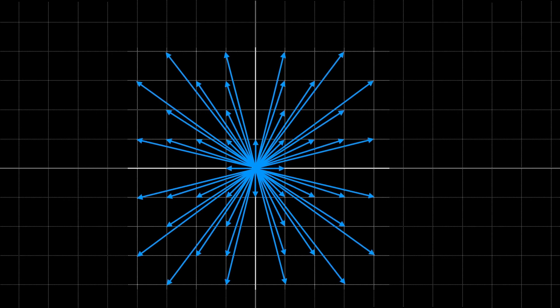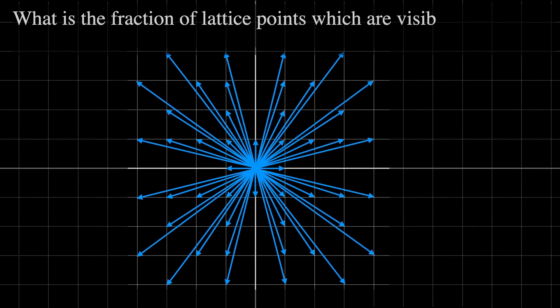By the end of this video, I want to have answered the question what is the fraction of lattice points which are visible from the origin? Interestingly, this question is strongly connected to prime numbers and the Riemann zeta function, a function well known for being central to the famous Riemann hypothesis.